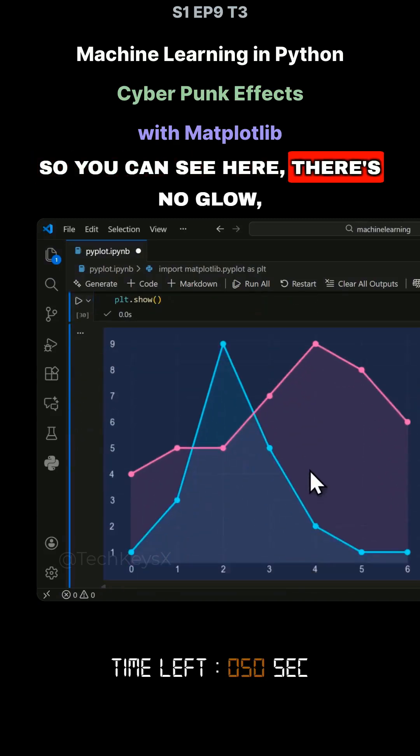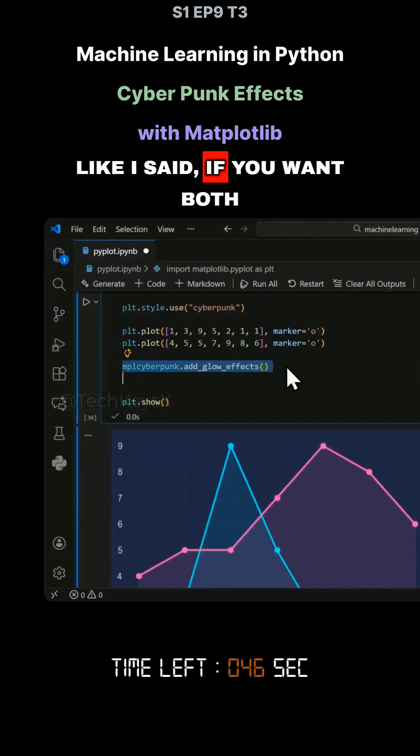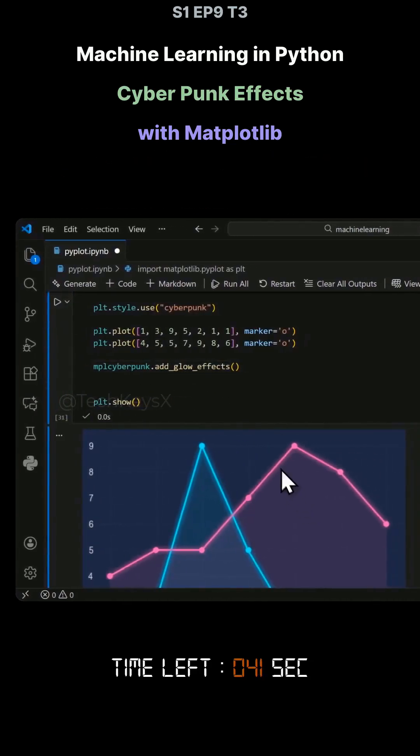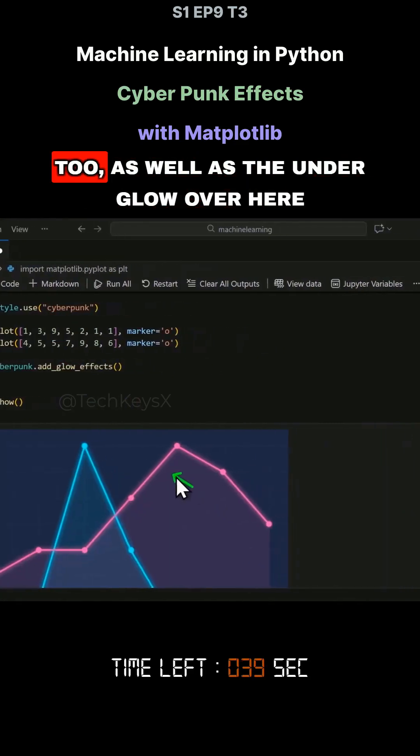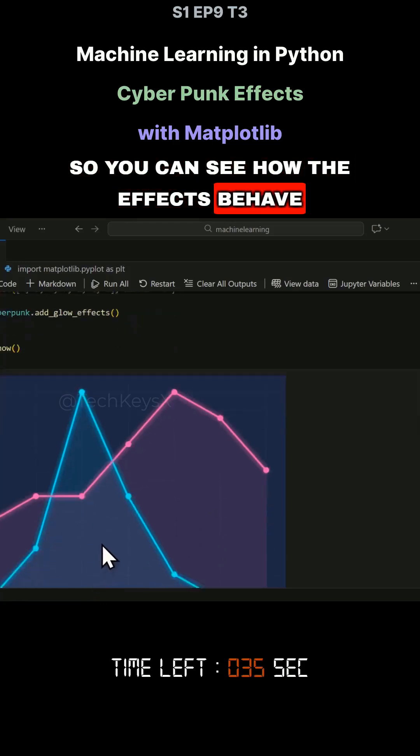So you can see here there's no glow, but there is an under glow here on the line. Like I said, if you want both effects, then you can add glow effects and this will do both of them at the same time. And you can see the line is glowing too, as well as the under glow over here. So you can see how the effects behave.